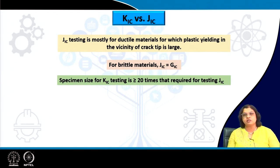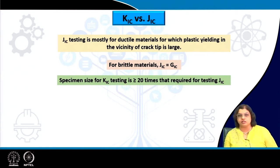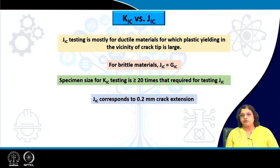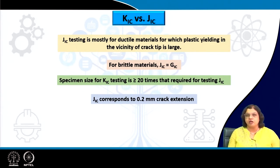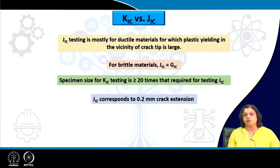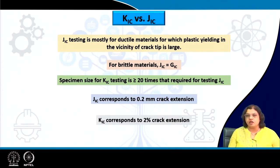The specimen size for K1c testing is seen to be 20 times or more than that required for J1c testing, meaning we require quite a larger specimen for K1c. Another important fact is that the J1c critical value at the onset of fracture is determined based on 0.2 millimeter of crack extension, whereas K1c corresponds to 2 percent of crack extension using an offset method to determine the onset of unstable or brittle fracture.